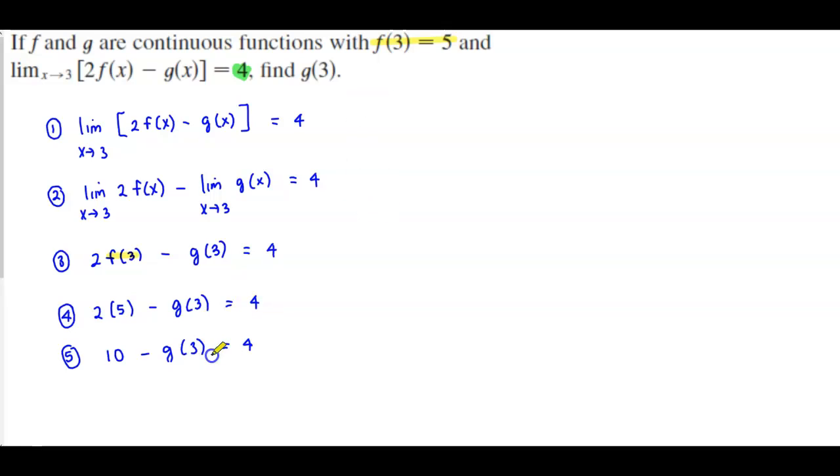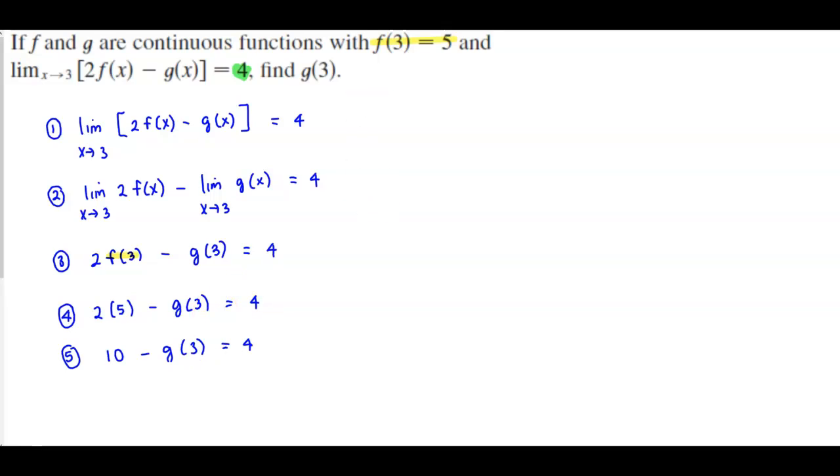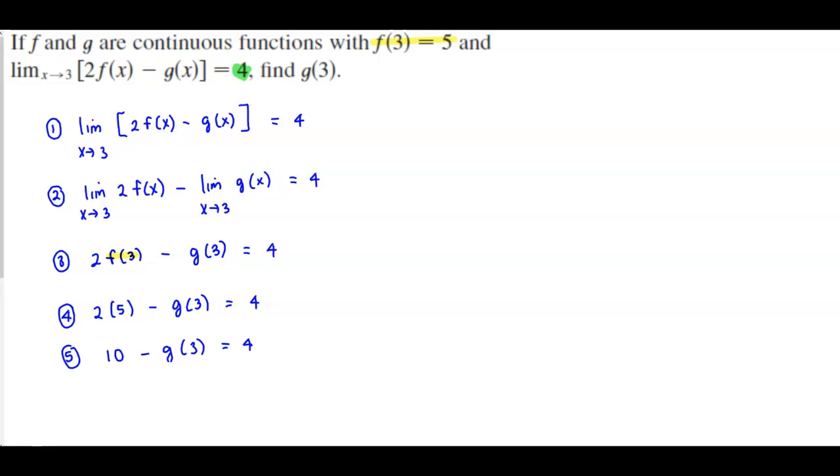And now what we can do is we can solve for g(3) by isolating it here. So we can subtract 10 from both sides. We get negative g(3), which is equal to 4 minus 10, which is negative 6.